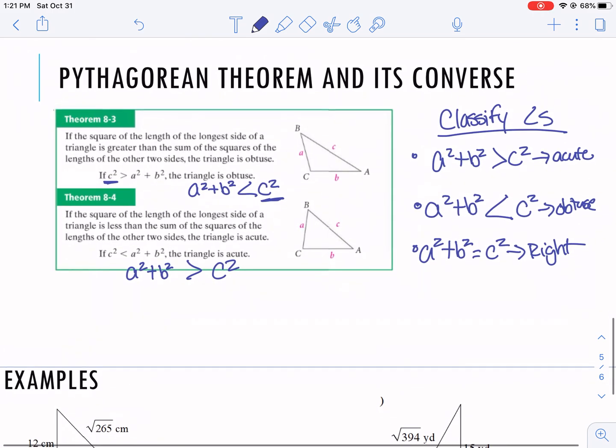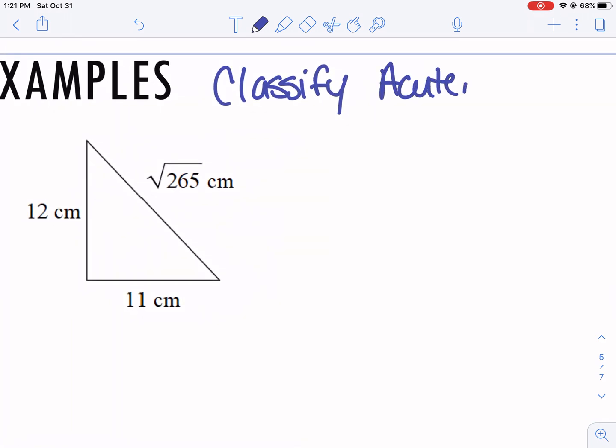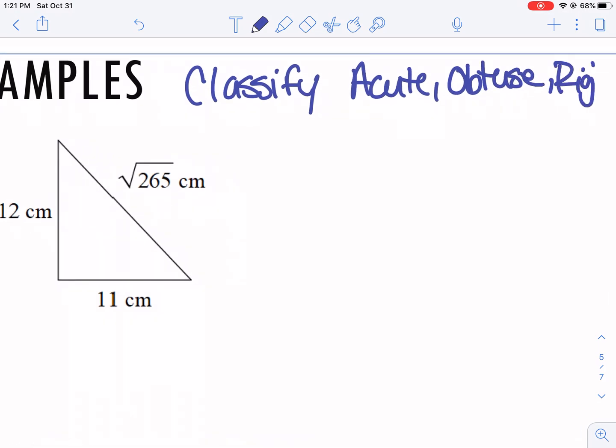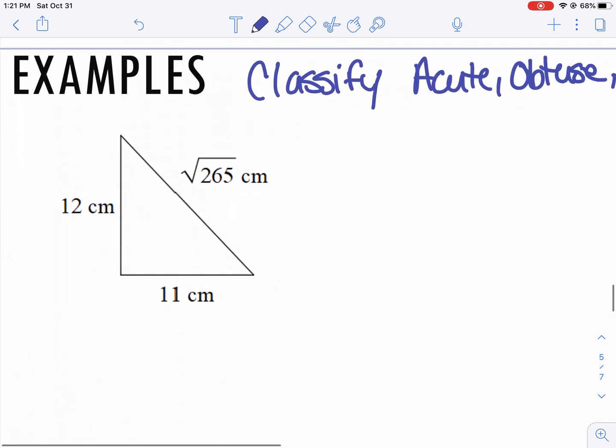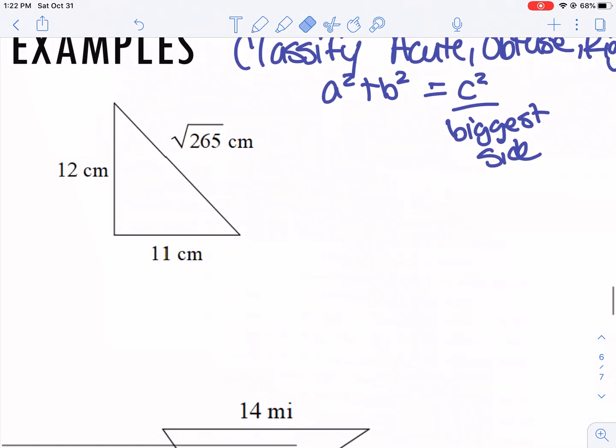So let's talk about how we could classify here. Looking at this example, we have our three sides, and I want to classify if the triangle is acute, obtuse, or right. When using that Pythagorean theorem still, the c is going to be your biggest side. So looking here, this is going to be the biggest side. So when we plug it in, we're going to do 12 squared plus 11 squared.